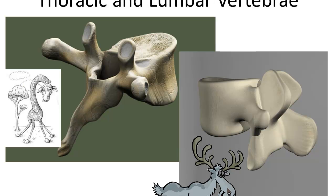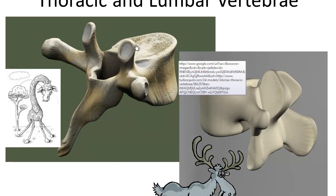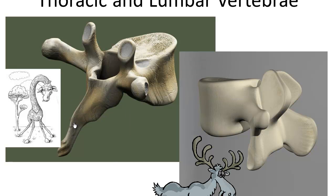The thoracic vertebrae are found in the thoracic area where the ribs are located. They have a long spinous process, and there are 12 thoracic vertebrae. If you look at a single isolated thoracic vertebra from the side, it looks like a giraffe — you can see the nose, ears, and horns of the giraffe. That's a classic thoracic vertebra.